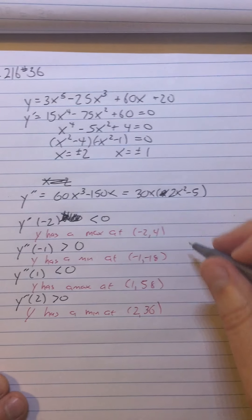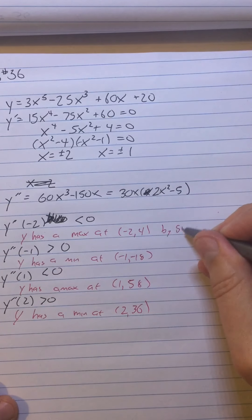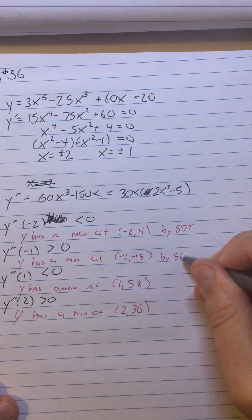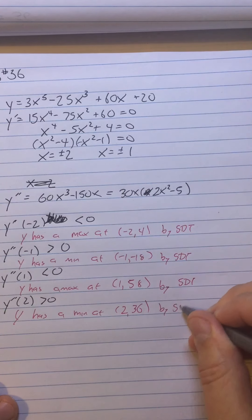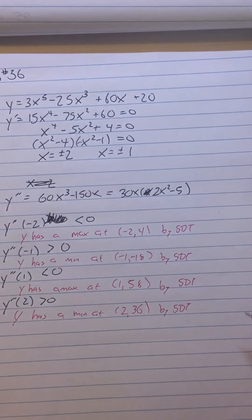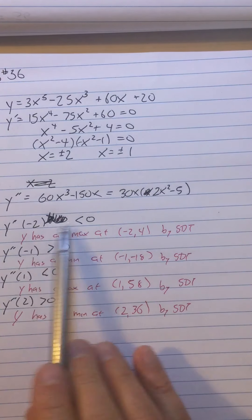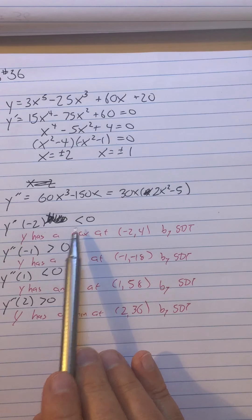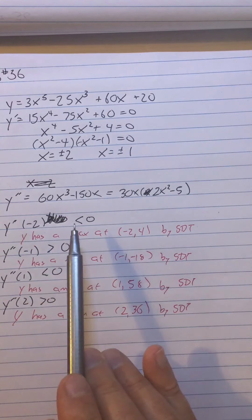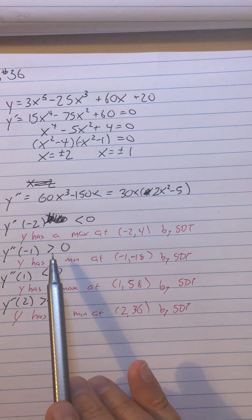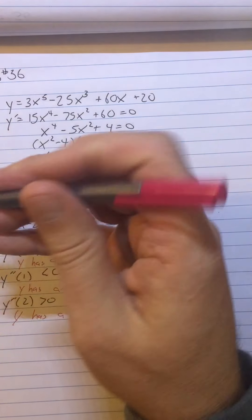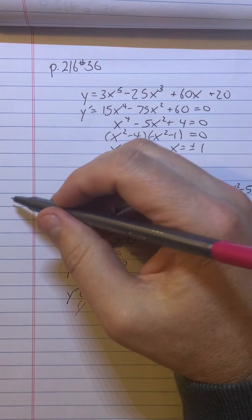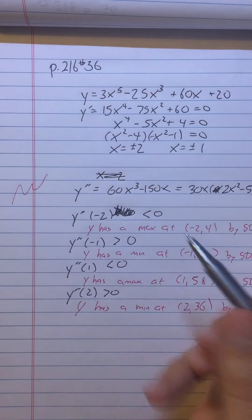And the justification of all these is by second derivative test. And that's it for this problem. So one thing that I notice is that when I made the mistake up here, the reason I knew I made a mistake is that by doing the x's consecutively, you can't have two maxes in a row without something in between them. If you think about it, right? When I have a nice continuous function.